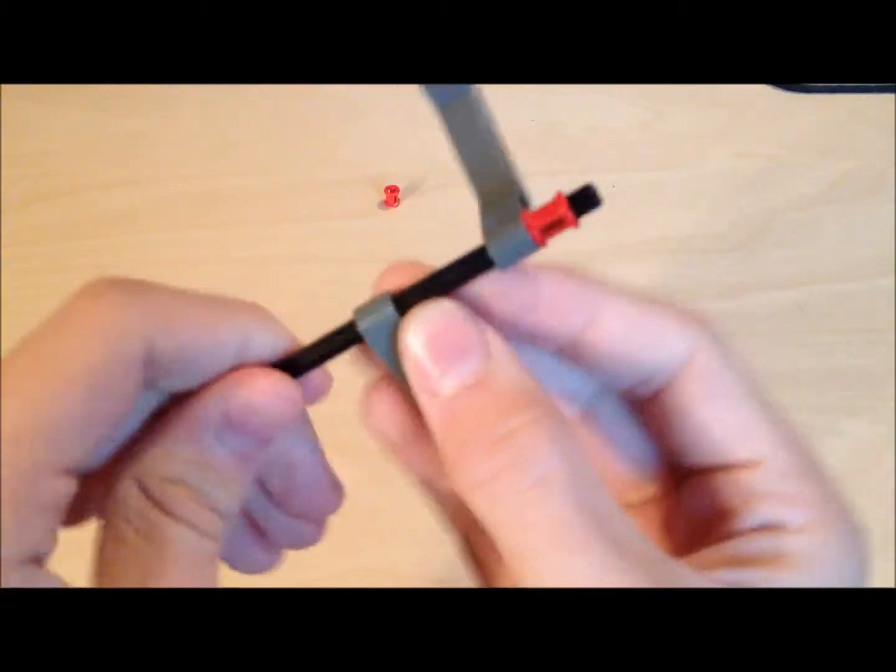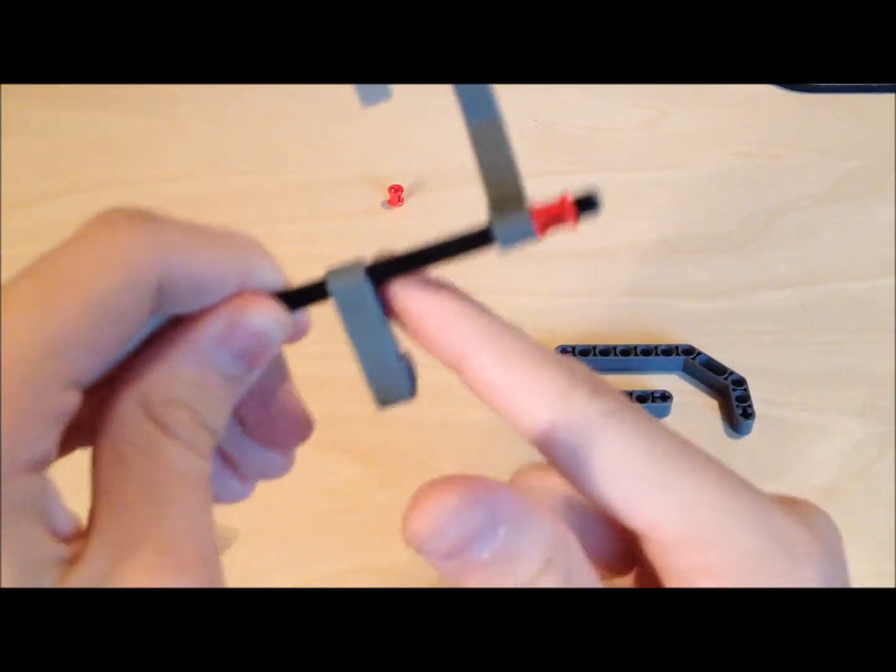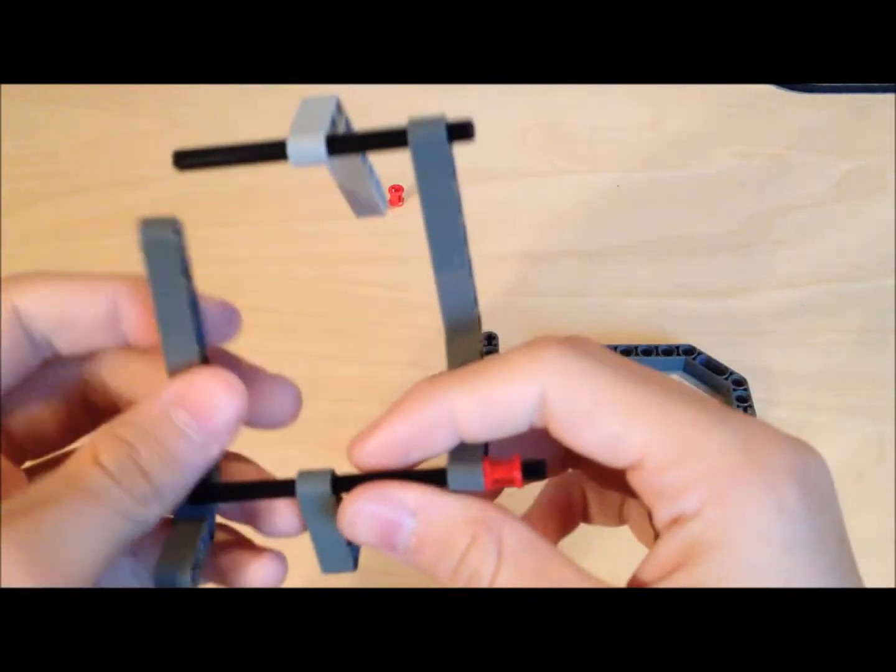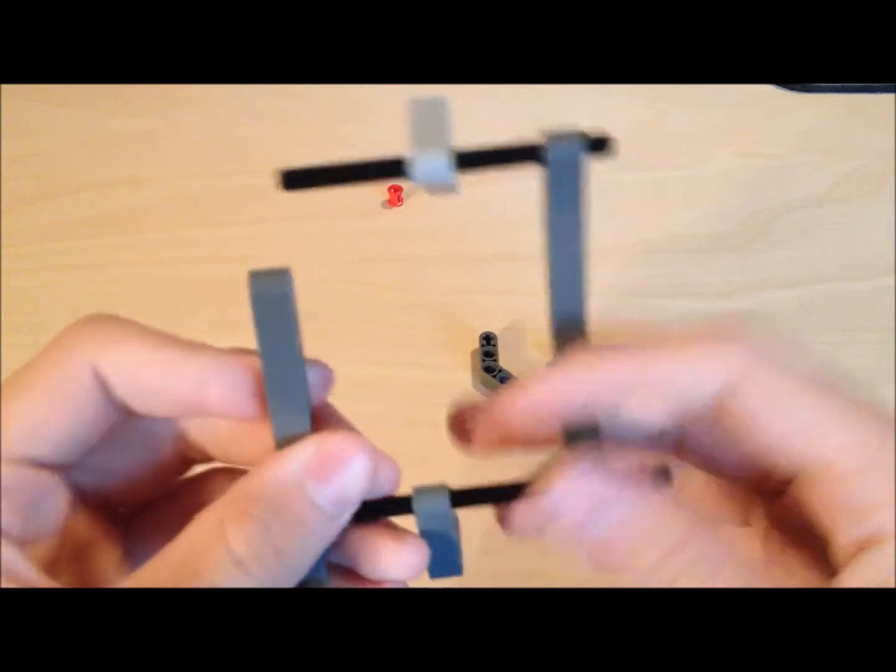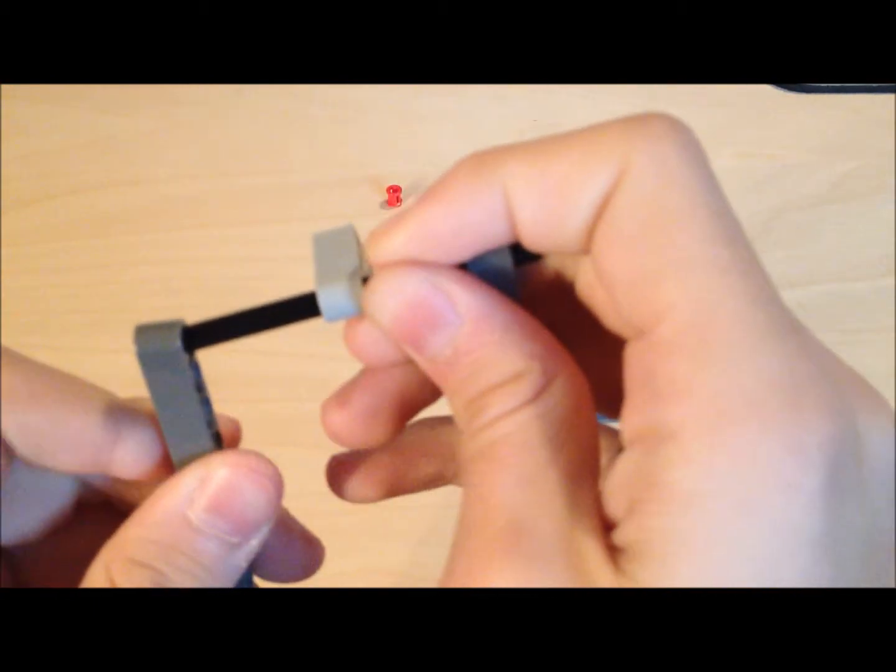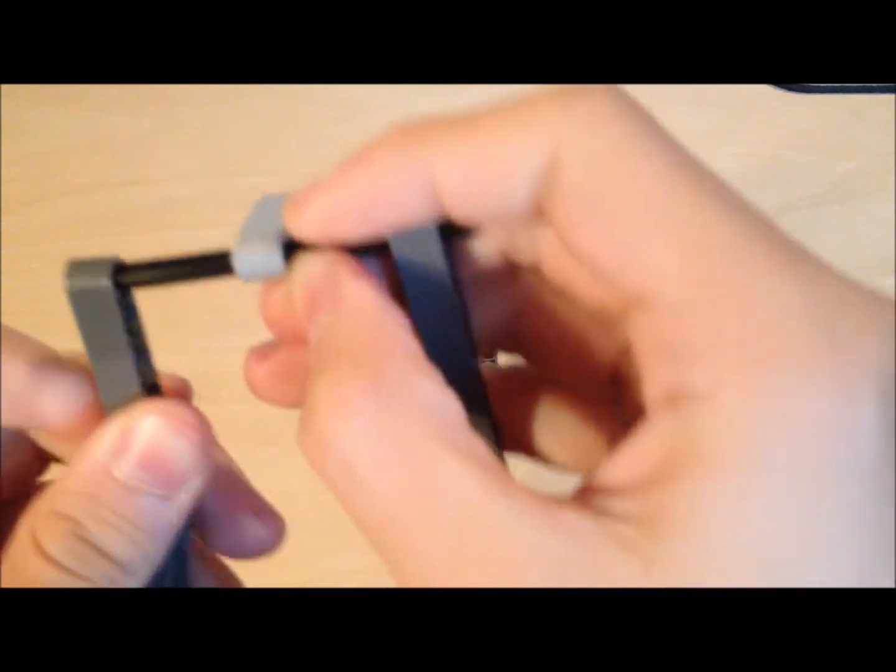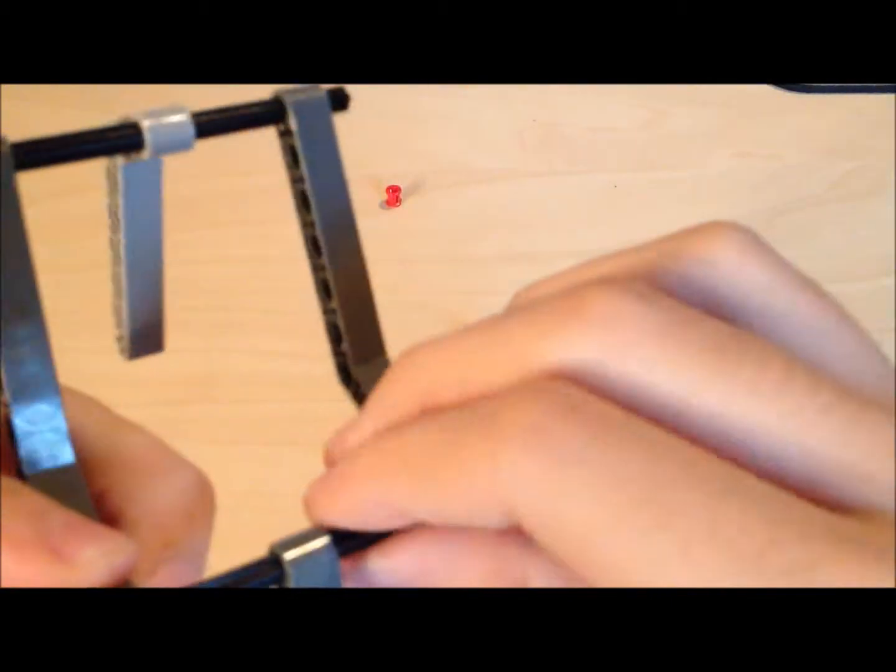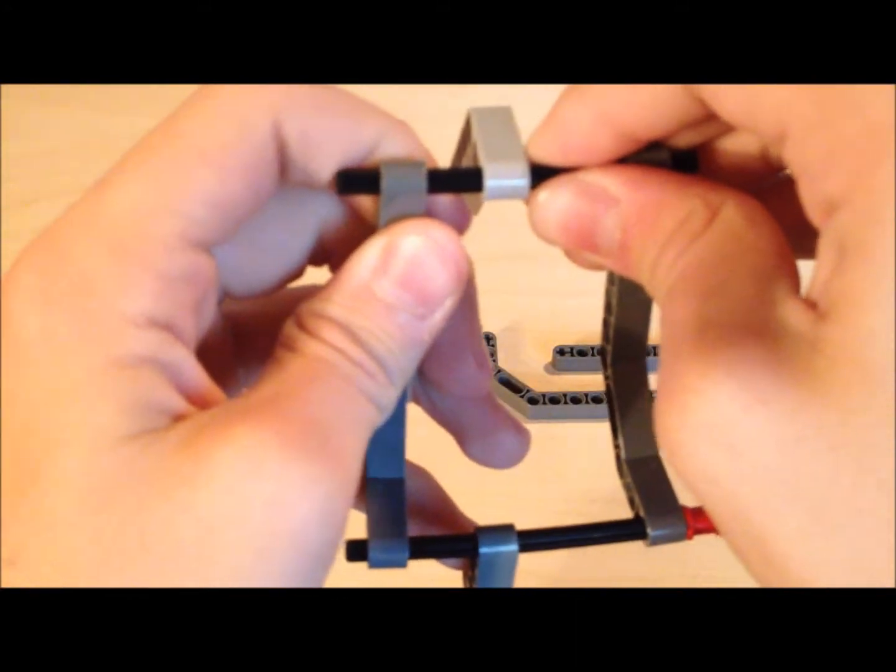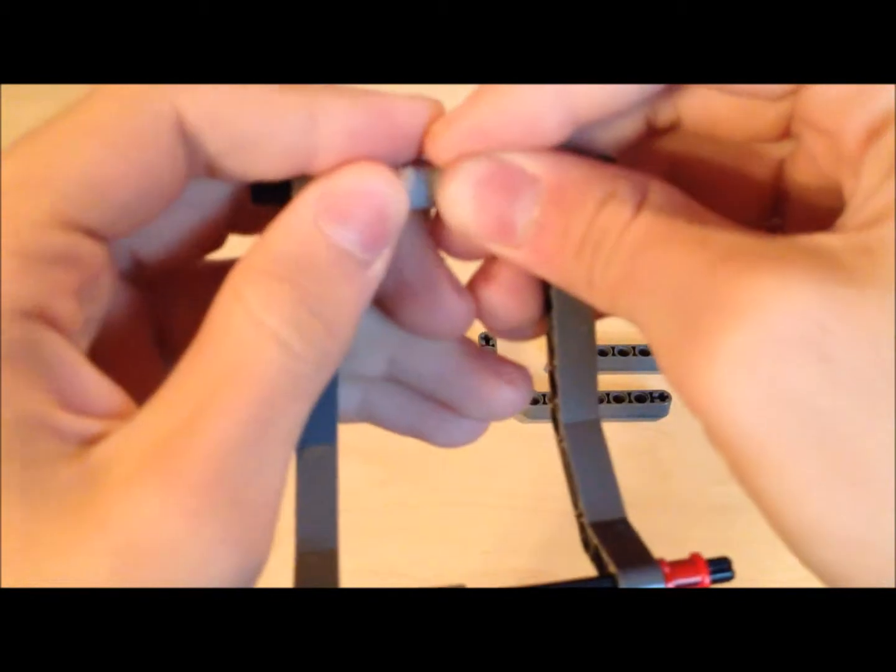Put it kind of towards the side so you have room for your charger to go through. Then you want to put on the other angle piece, and it should fit right along the plus rods because this piece does. So kind of wiggle it on there.